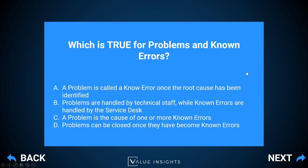Answer B — problems are handled by technical staff while known errors are handled by the service desk — is not true; the service desk could handle problems and technical teams can also create known errors that are then communicated to end users. Answer C — a problem is the cause of one or more known errors — is incorrect; a problem is the unknown cause of one or more incidents. Answer D — problems can be closed once they become known errors — is not true, because identifying the root cause is a great step but we still need to solve it, potentially through change enablement.